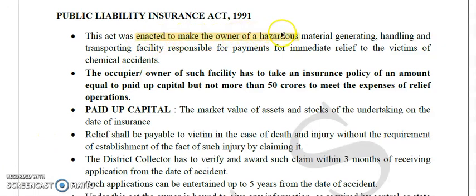This act was enacted to make owners of hazardous material — those who generate, handle, and provide transporting facilities — responsible for immediate relief to victims of chemical accidents. If any chemical accident takes place in their company, while transporting, or while handling, they have to compensate and provide immediate relief to the victim. There is also an environmental relief fund — funds which the owner of the industry has to provide if their activity causes any destruction to the environment, so that the environment gets restored.